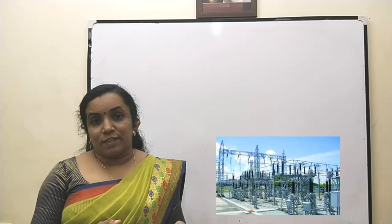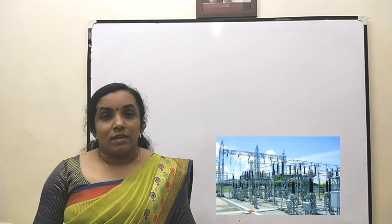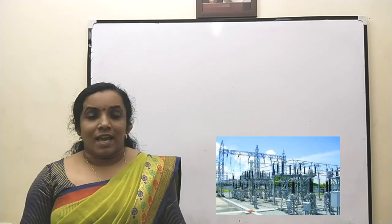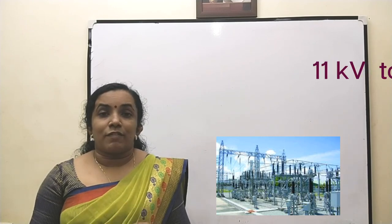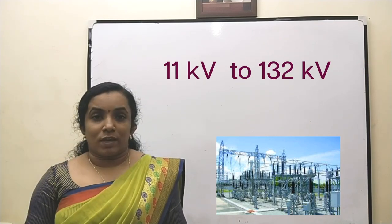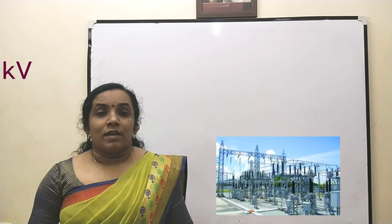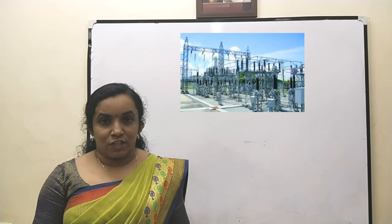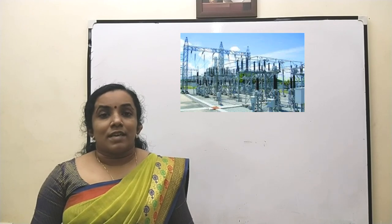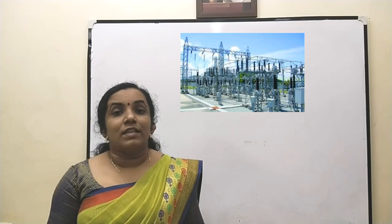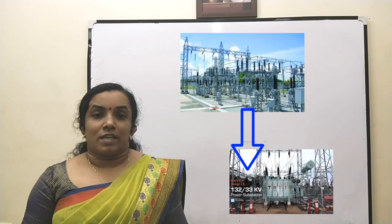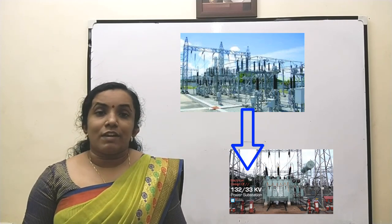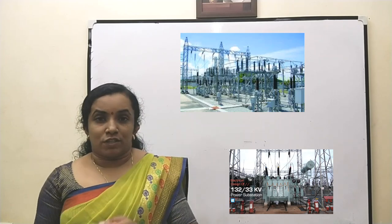The alternating current generated at the power station is first sent to a grid substation, which is located very near to the generating station. At the grid substation, the voltage is stepped up from 11 kV to 132 kV to reduce energy loss. This 132 kV AC voltage is then transmitted to the main substation, which is located very far from the grid substation.